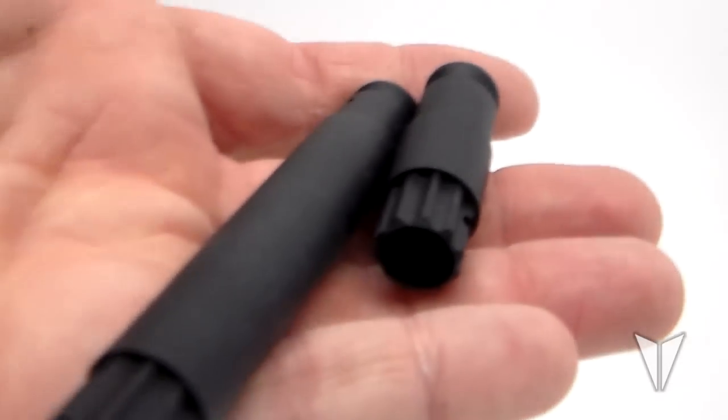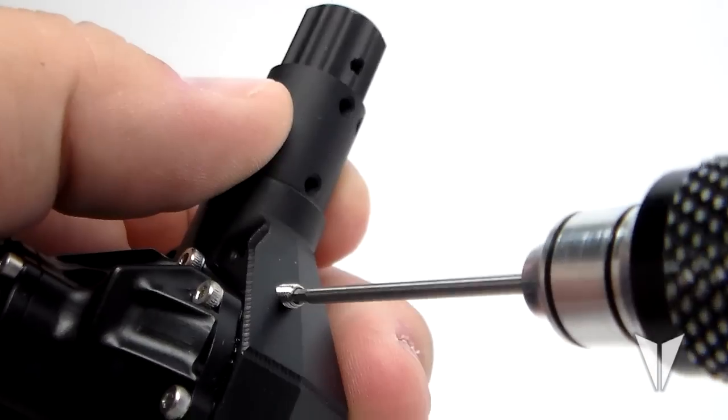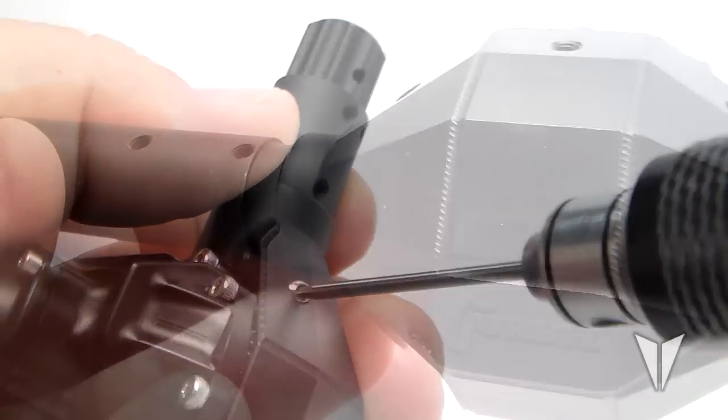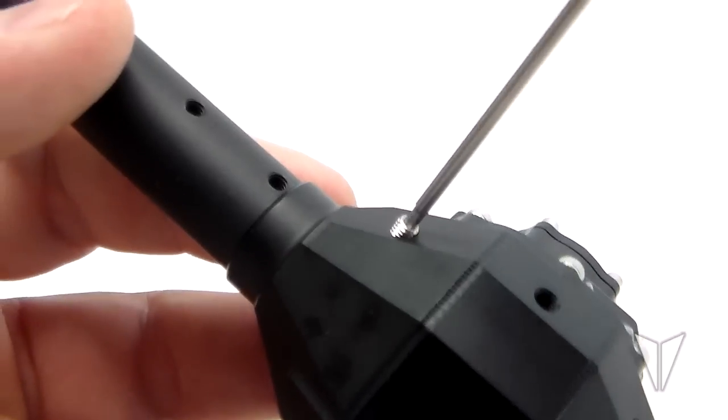Now we can move on to the axle tubes. Secure the axle tubes in place as shown using M3 by six millimeter set screws. We'll need to loosen these later to line up the tubes with the axle truss, so just lightly tighten them for now.